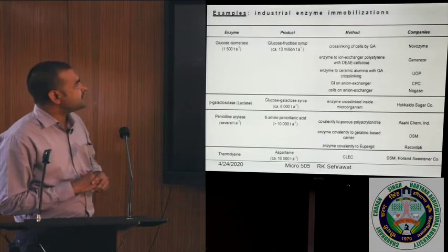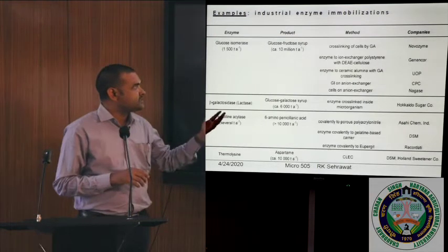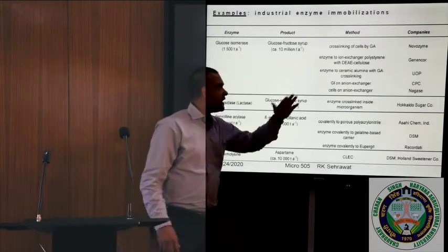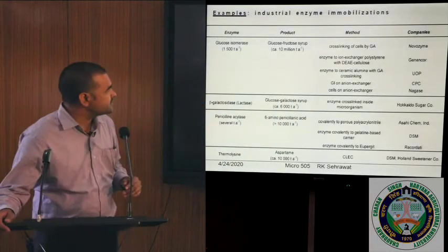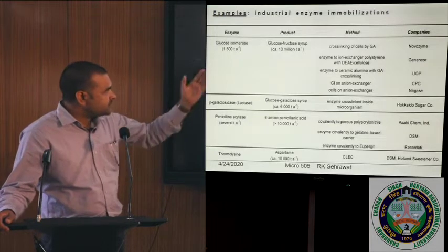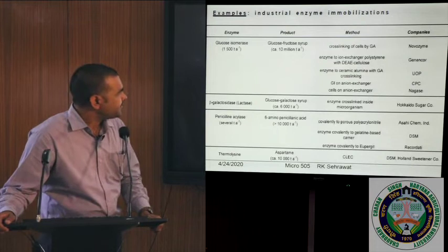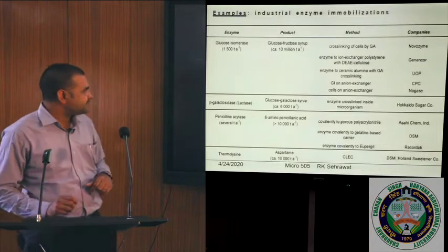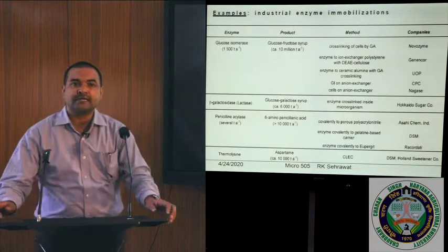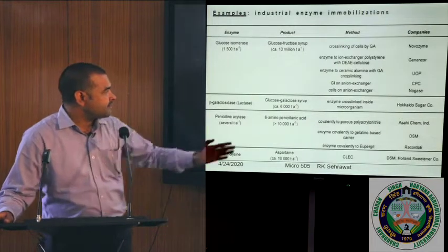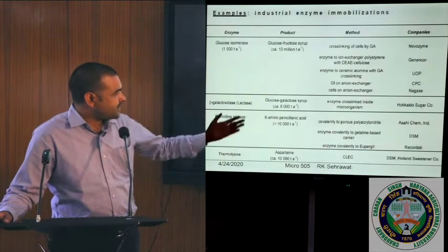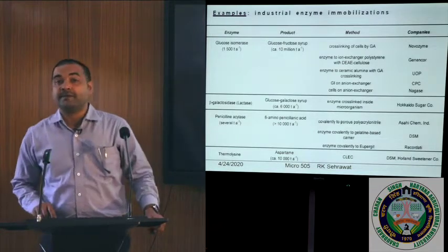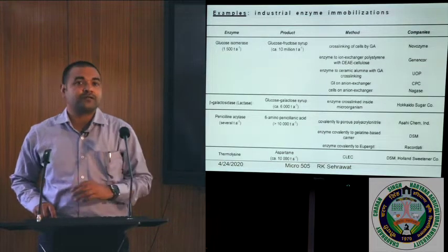These are a few industrial enzymes used by different industries via cross-linking: glucose isomerase is the most widely used, and companies like Novozyme, Gencor, UOP, CPC, and Nagaz use this — methods include cross-linking by glutaraldehyde, enzyme linked to ion exchange with polystyrene, enzyme to ceramic alumina, and G-ion ion exchanger. Beta-galactosidase (lactase) is used by the Hokkaido Sugar Company. Ashikam, DSM, and Ricordia use penicillin acylase. Different industries use different enzyme immobilization methods to cut down the cost of production input.